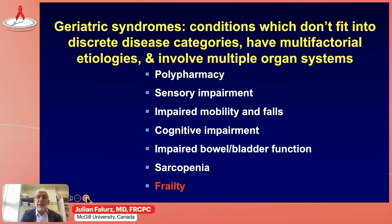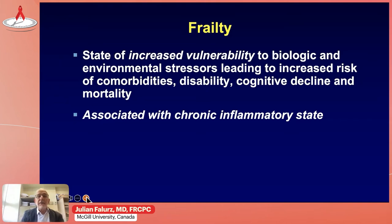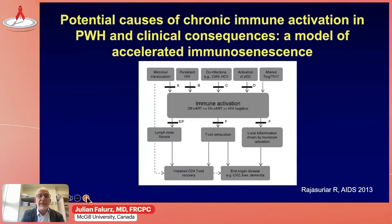The common geriatric syndromes we think about are polypharmacy, falls, mobility impairment, cognitive impairment, and frailty, which is one of the most common, among others. Frailty is a state of increased vulnerability to biologic and environmental stressors leading to increased risk of comorbidities, disabilities, cognitive decline, and overall mortality. And frailty, as I mentioned, is associated with a chronic inflammatory state.